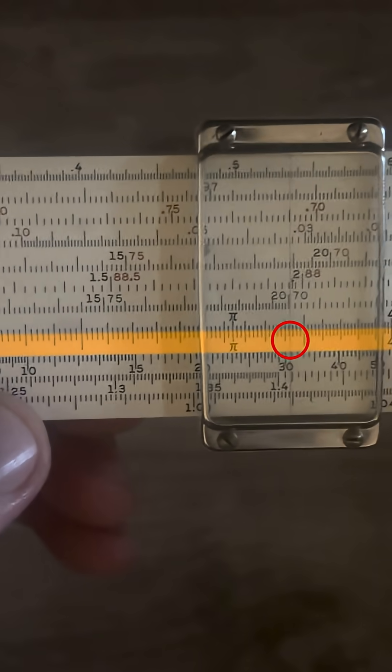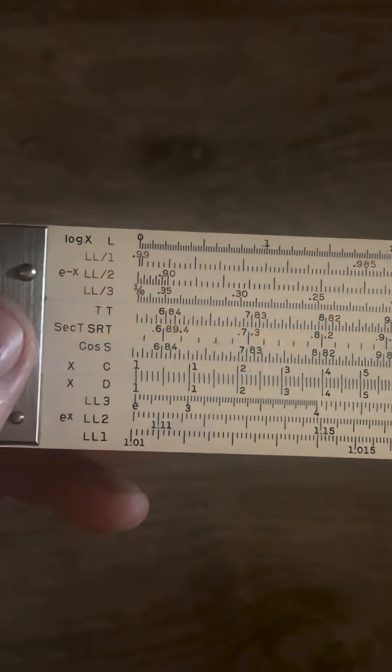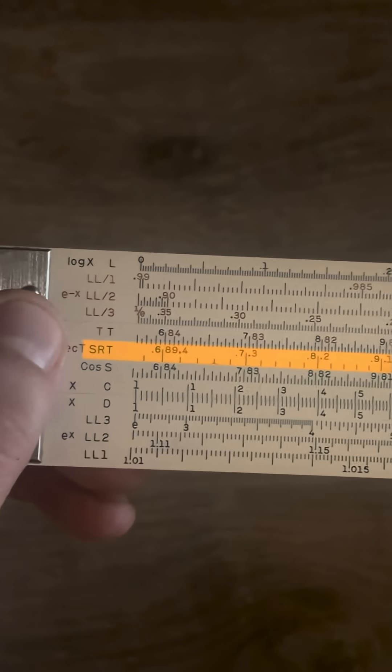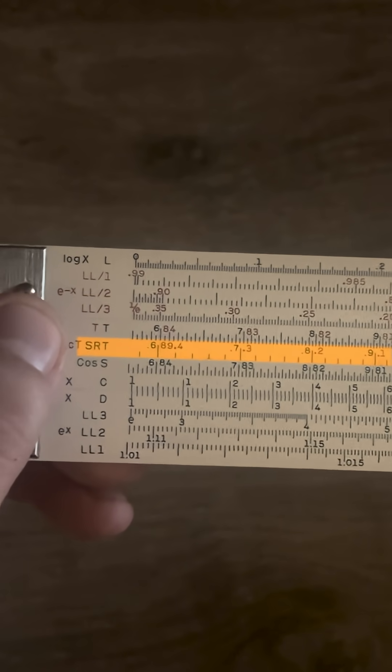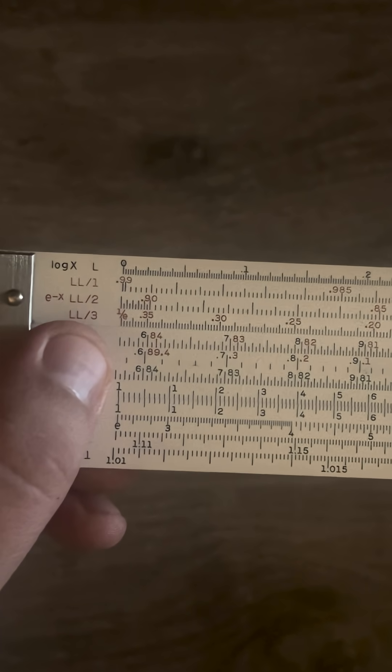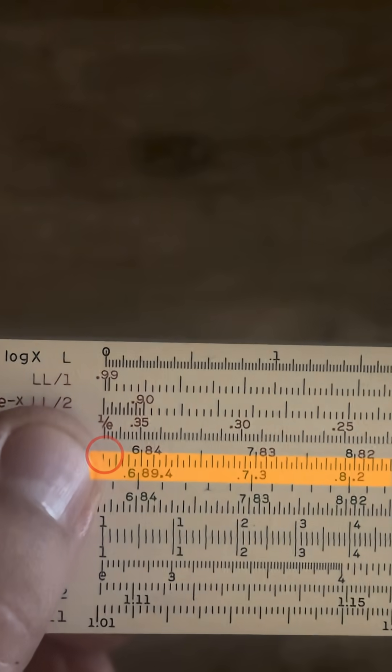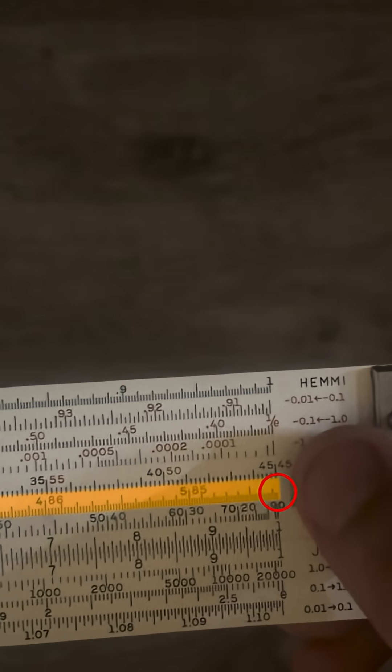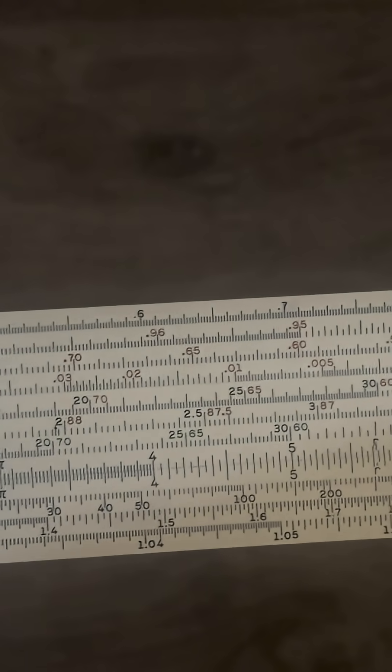Now another thing you'll use eventually is the SRT scale. That's sines too, but it's with anything smaller than 5.7, because as we know S starts at 5.7. SRT starts at 0.57 and goes up to 5.7 on the other side.